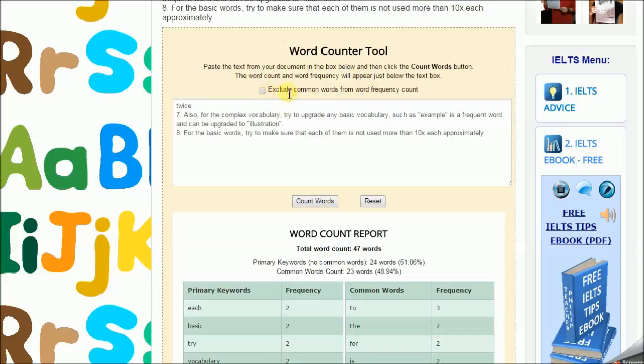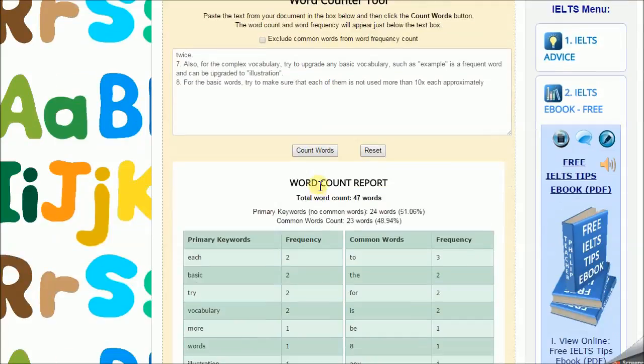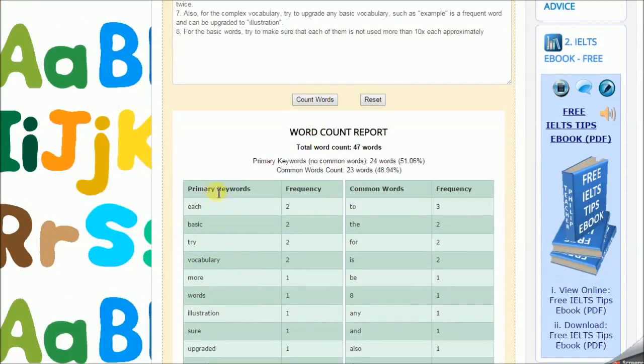So first of all, you can click on exclude and then after that you can put in the vocabulary. After you do that, it comes here and it shows the number of words for the primary words, the important words, the percentage, and also the basic words and how many of each.